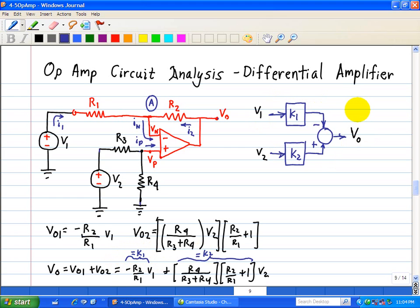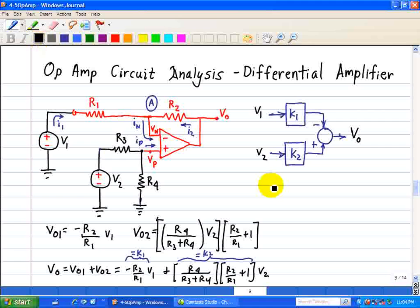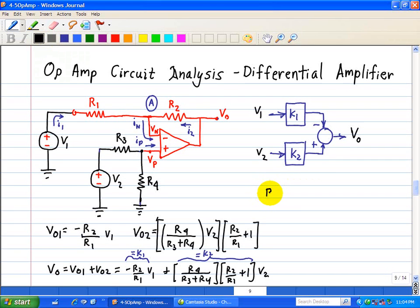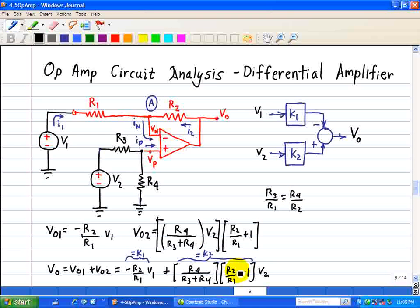Let's consider the special case when the ratio of R3 over R1 is equal to R4 over R2. When we have this constraint, this K2 can be reduced to the following.